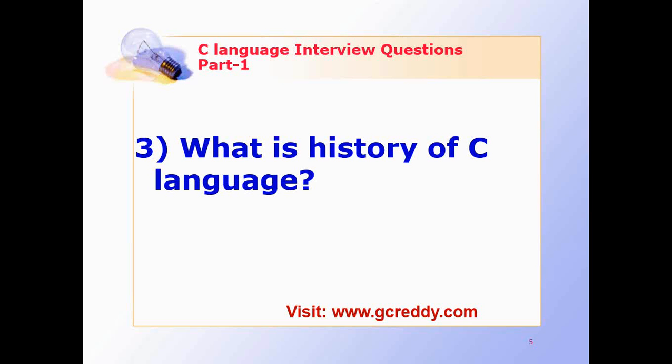What is history of C language? C is a programming language which was born at Bell Laboratories of USA in 1972. It was written by Dennis Ritchie.